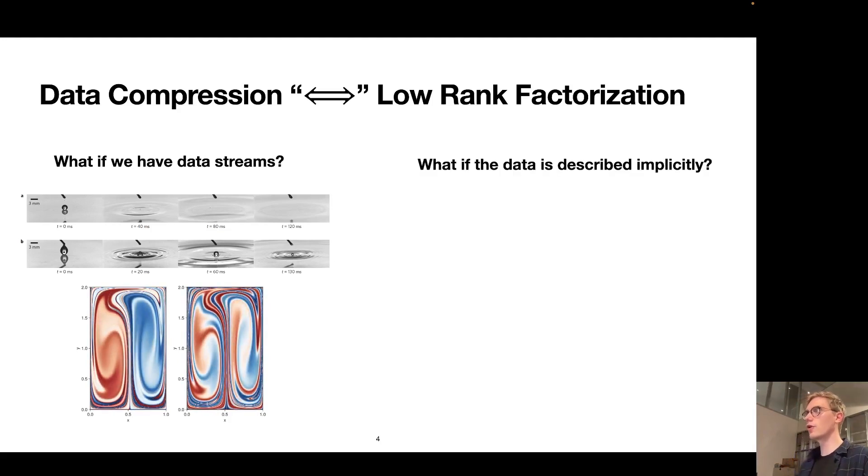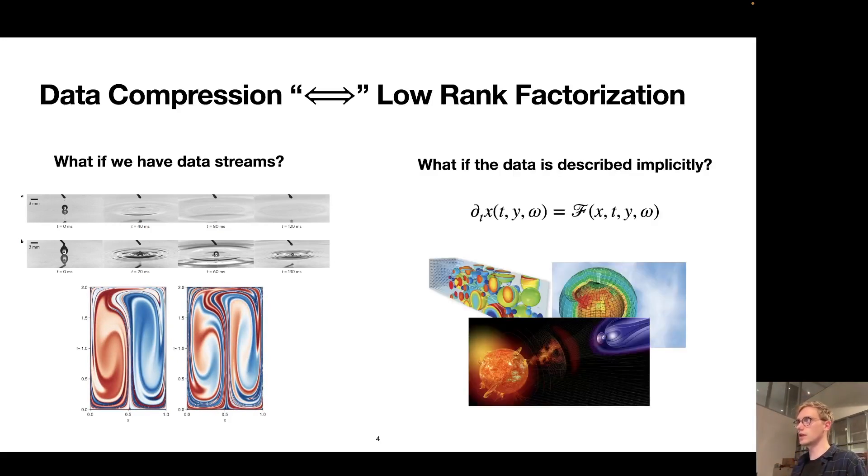Maybe more importantly, not all data is actually known explicitly. For example, we are often only having access to expensive to evaluate high fidelity physics models but would still like to get a compressed approximation of their solutions without actually having to solve these expensive models in the first place. In fact, propagating uncertainties through very expensive space weather models was our main motivation for working on dynamical low-rank approximation, which is one way to address these two issues.